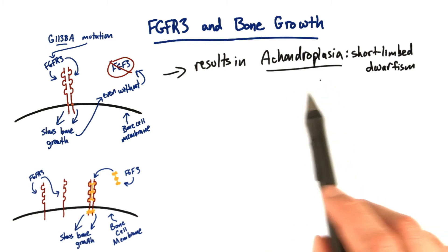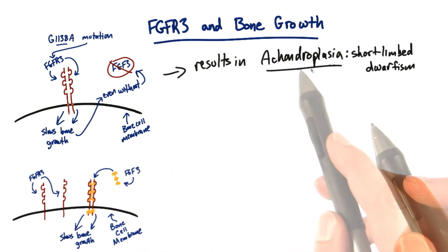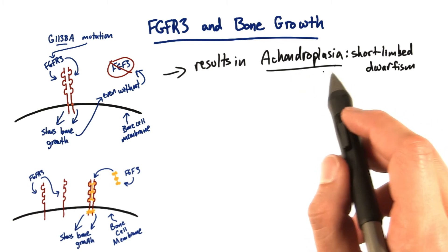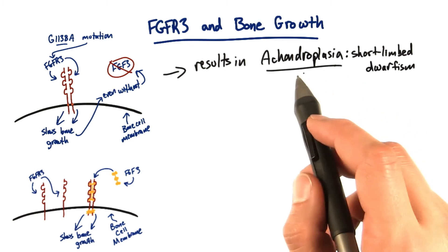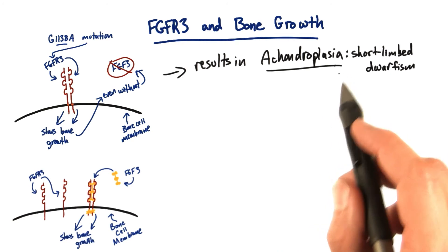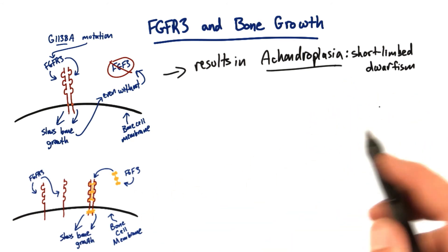A chondrocyte is what we call a bone cell. The chondro part refers to bone. Plasia means growth, so chondroplasia means bone growth and achondroplasia means the absence or loss of bone growth. That's what dwarfism is in this sense.